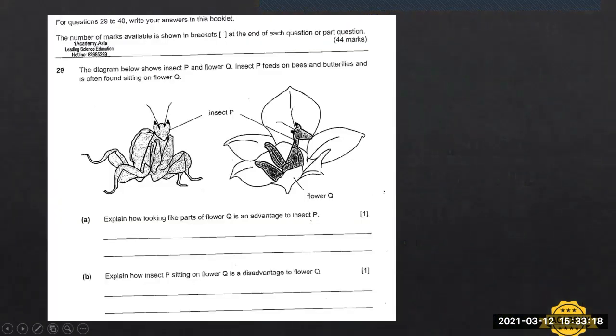This question appears in the 2019 PSLE science section B. In this question it says the diagram below shows insect P and flower Q. So this is insect P and flower Q. Let me annotate here. It says that insect P feeds on bees and butterflies. So I teach students to highlight these bees and butterflies and this insect P is often found sitting on flower Q.